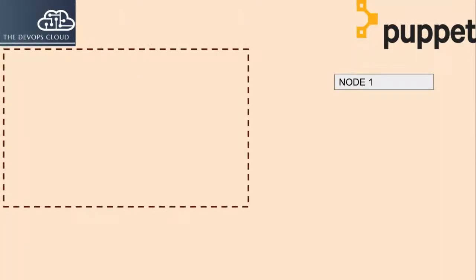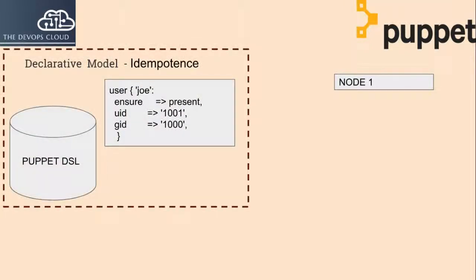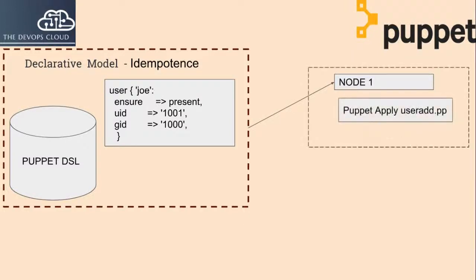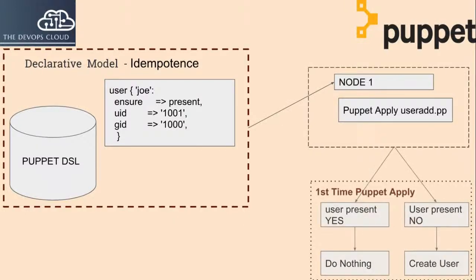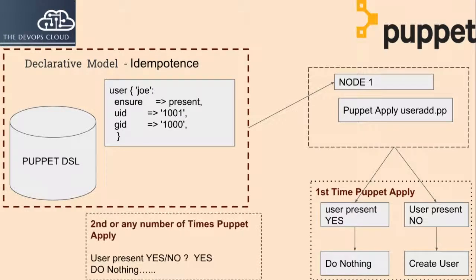Puppet supports idempotency, which makes it unique. In Puppet, one can safely run the same set of configuration multiple times on the same machine. Puppet checks for the current status of the target machine and will only make changes when there is a specific change in the configuration. For example, if a user is not present on the first Puppet run, it will create the JoeUser, but if you run it multiple times after, Puppet will not do anything as it only checks the desired state.